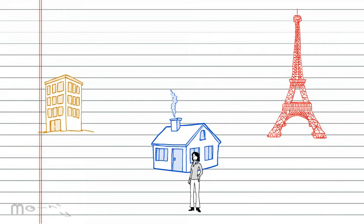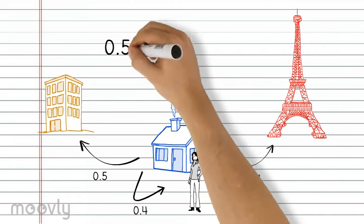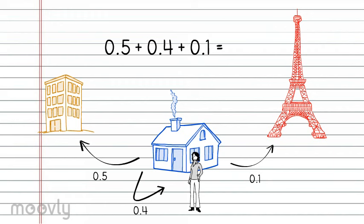In this model, if Romy is at home, she has a 0.5 chance of going to work, a 0.4 chance of staying at home, and a 0.1 chance of going to the Eiffel Tower. Notice that all of these transition probabilities sum together to equal 1. All transition probabilities going out of a state should always sum to 1.